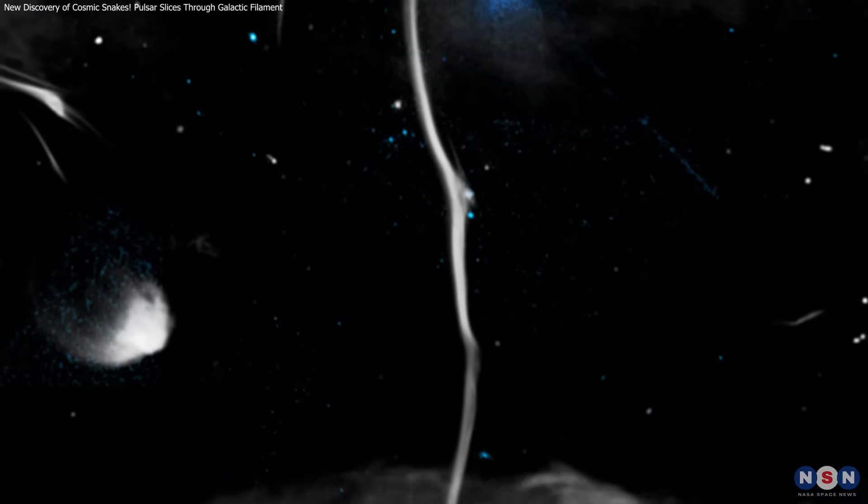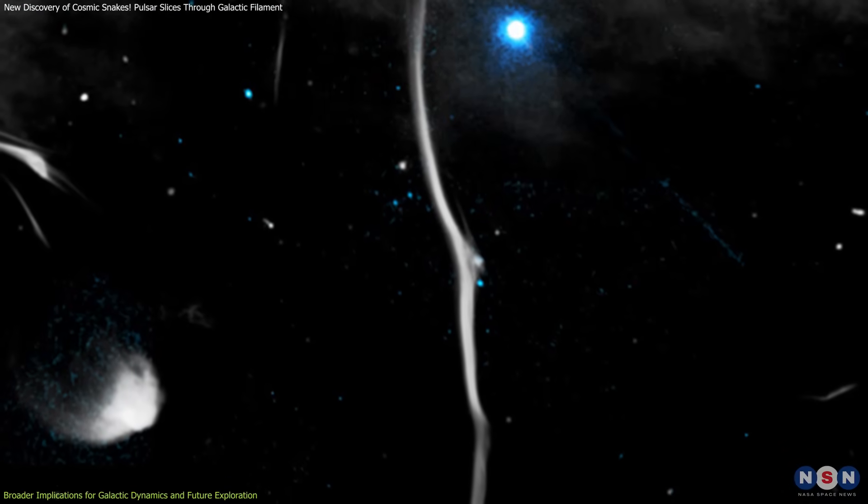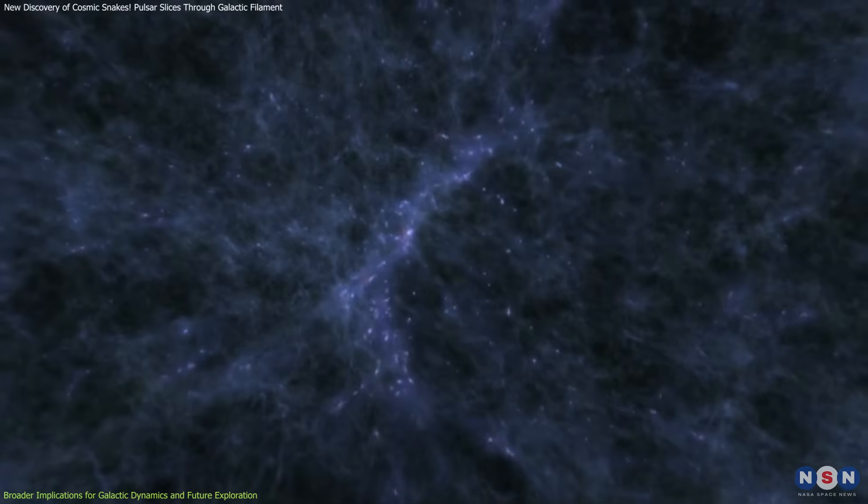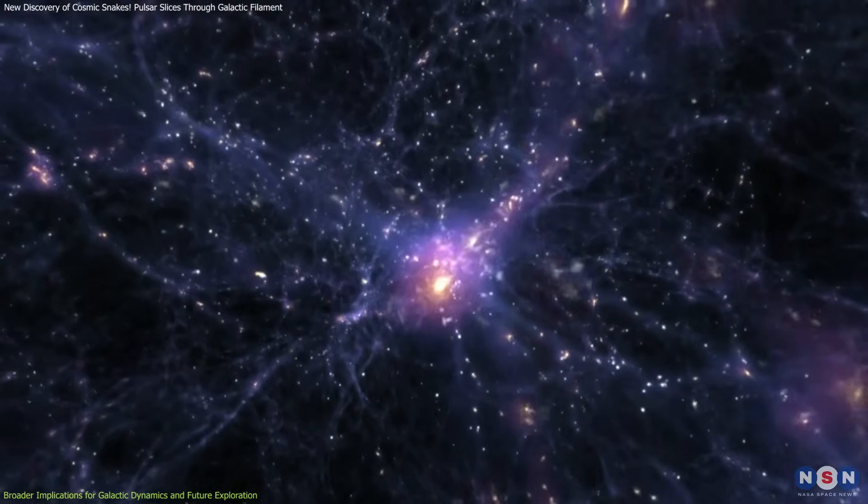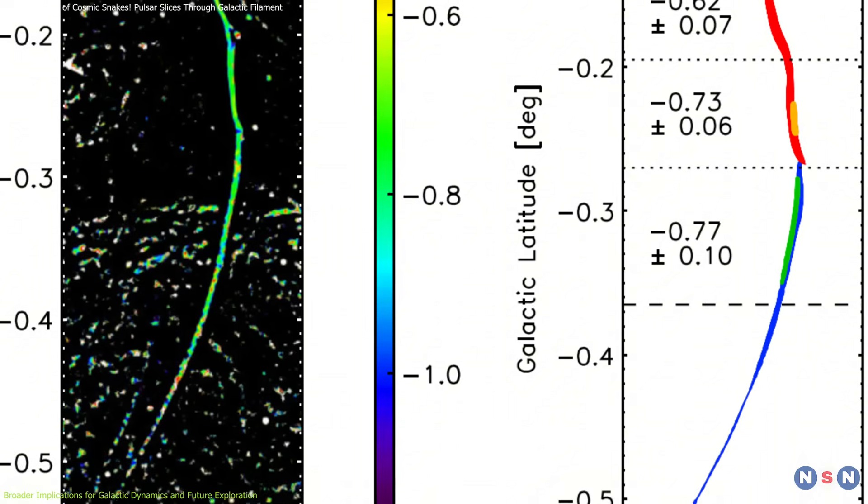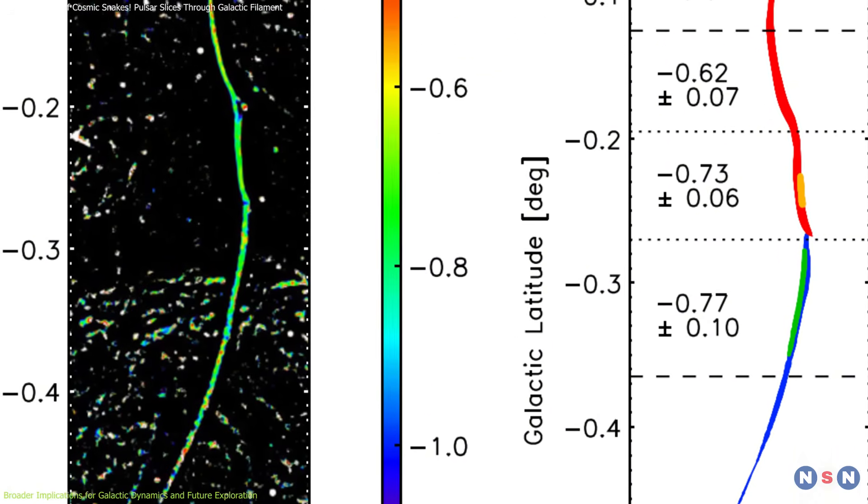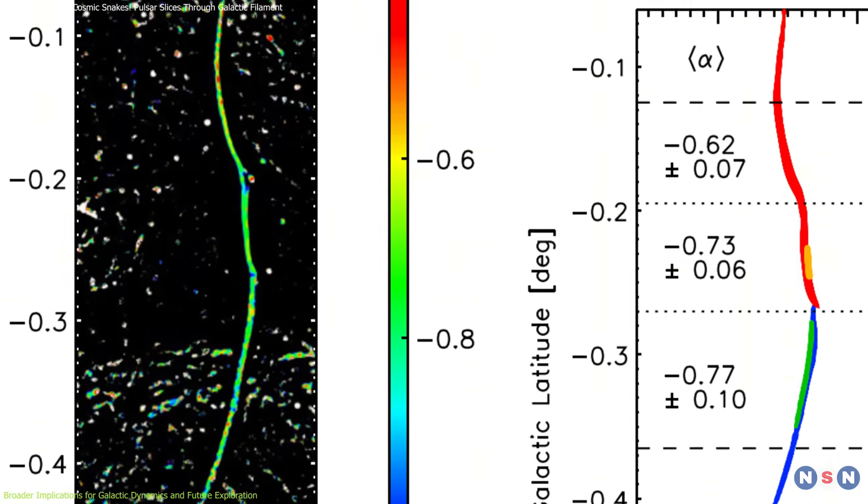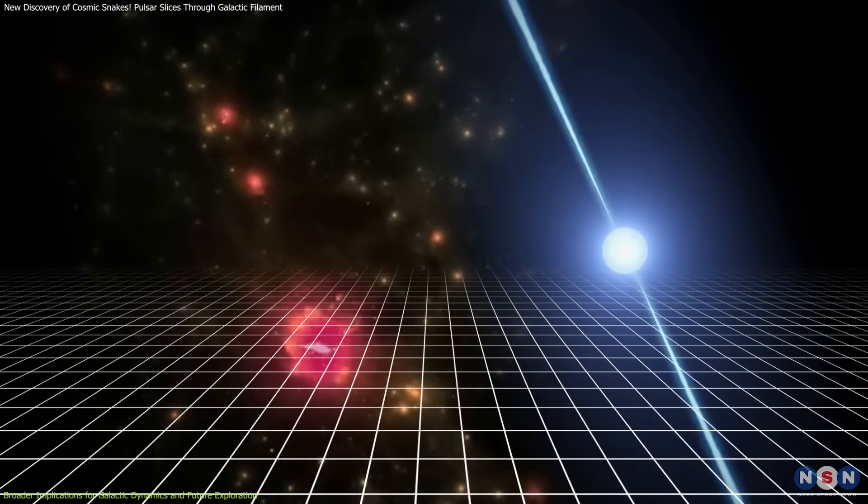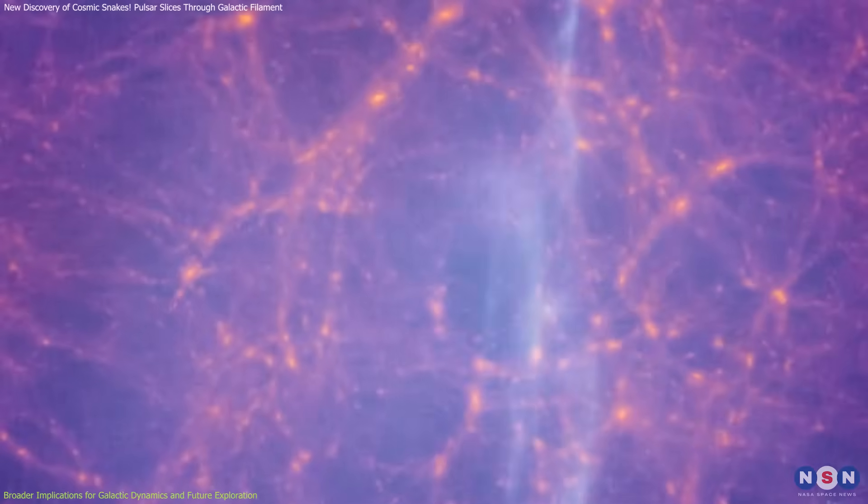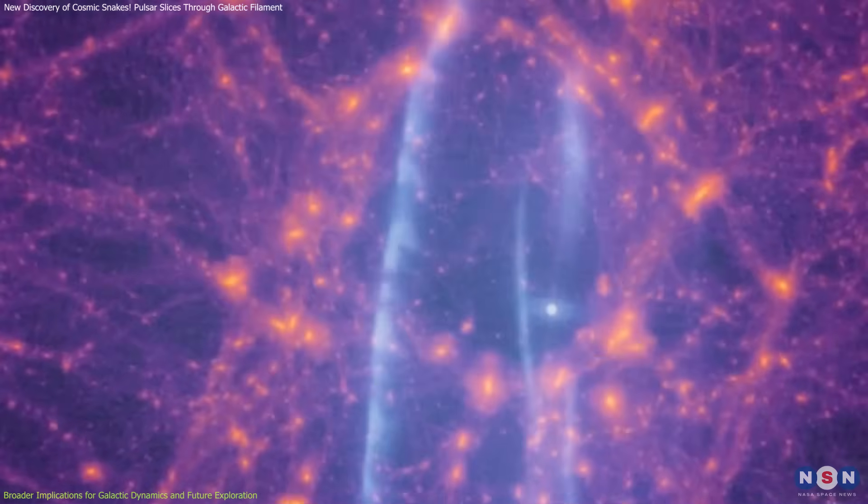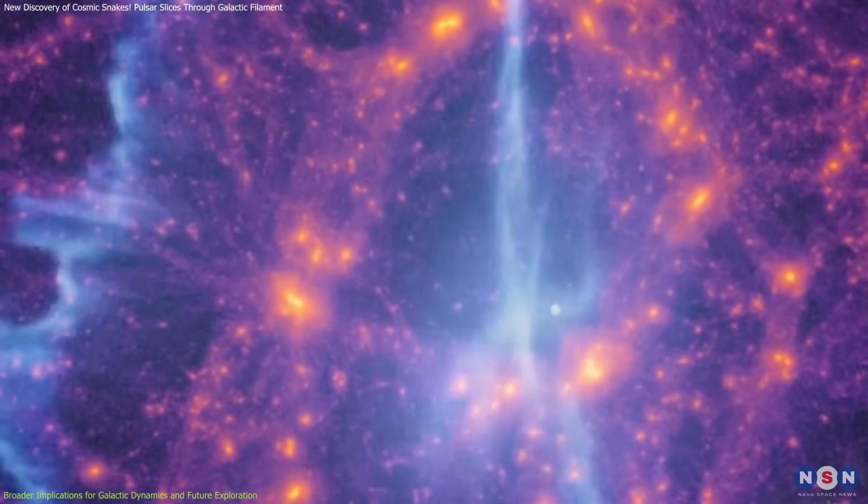The fractured Cosmic Snake challenges how we view galactic filaments. No longer passive pipelines for star formation, these structures appear to be dynamic players, capable of being bent, broken, and reshaped by external forces. The pulsar's collision with the filament highlights how even compact, dense objects can profoundly impact large-scale structures in the galaxy.